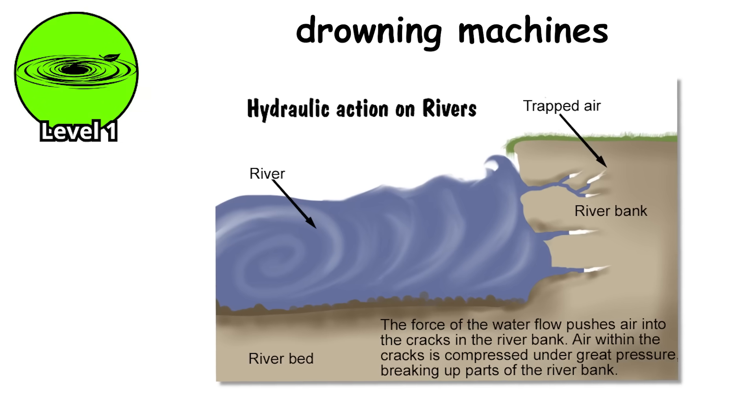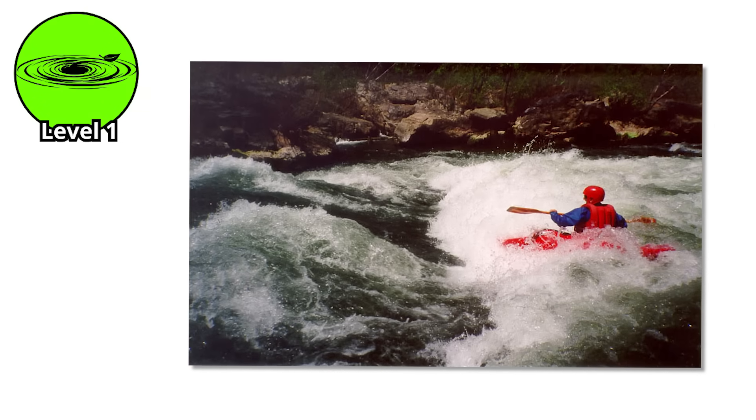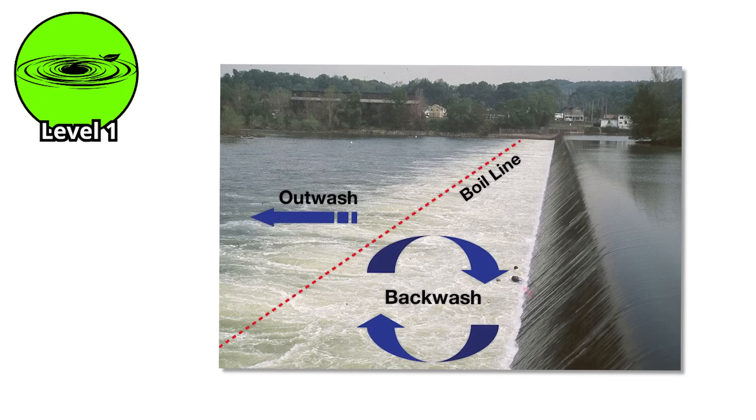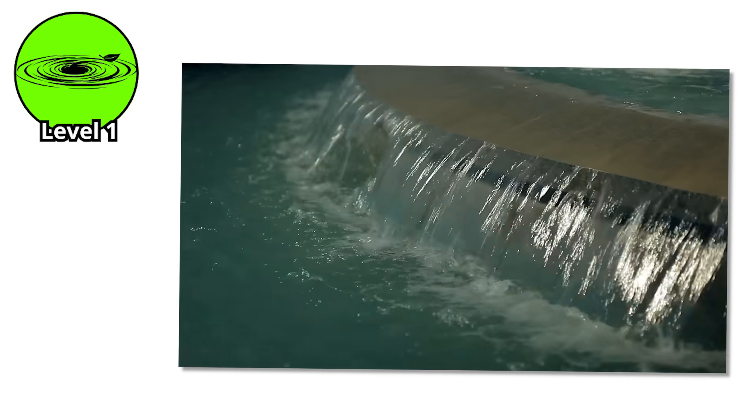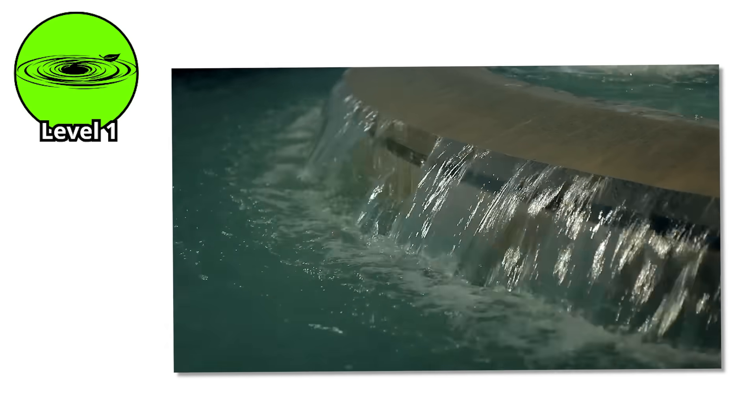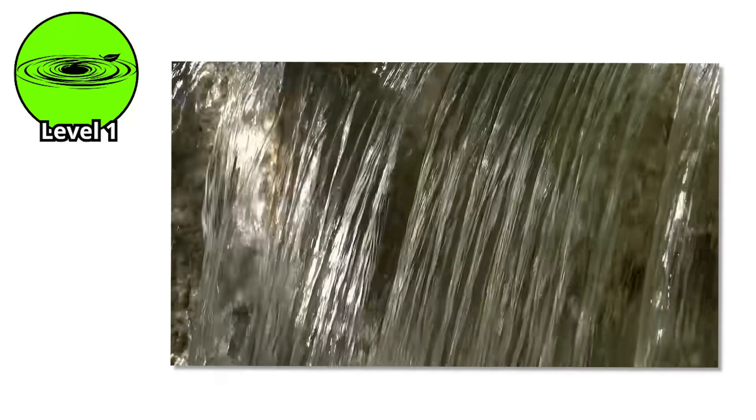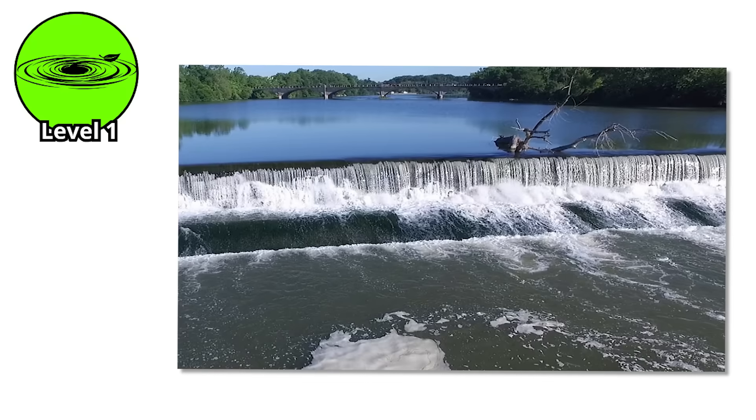They call them drowning machines, and that nickname isn't dramatic. It's accurate. A low head dam looks harmless from above. Just a small drop in the river, maybe 3 to 6 feet tall, water cascading over concrete in a smooth sheet. People see it and think, fun place to cool off, maybe wade in the shallow rapids below. What they don't see is what happens at the base.